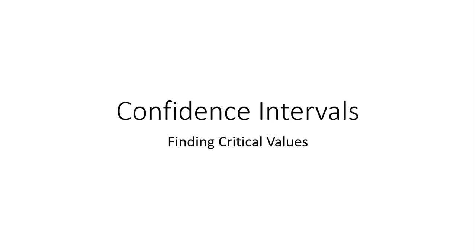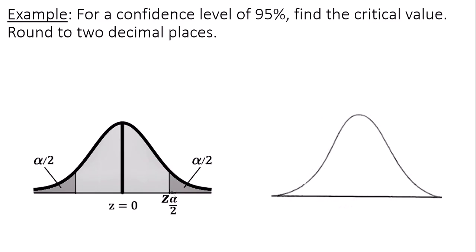Today we're going to talk about confidence intervals, how to find critical values. For a confidence level of 95%, find the critical value rounded to two decimal places.